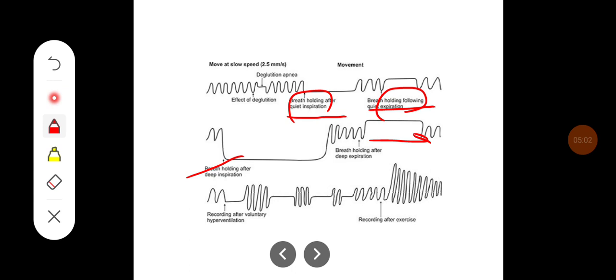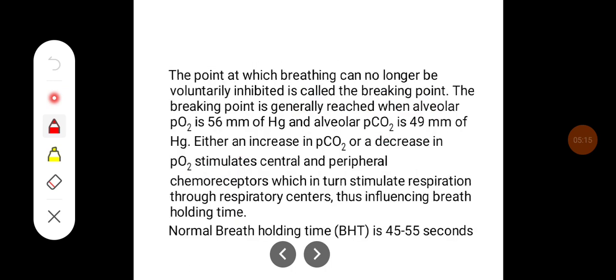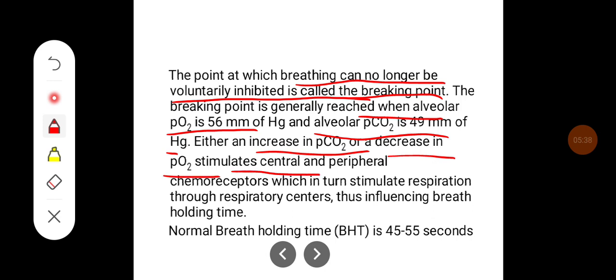Stimulation of the respiratory center is delayed, so breath holding time is greater with deep inspiration than with expiration. The point at which breathing can no longer be voluntarily inhibited is called the breaking point. The breaking point is generally reached when alveolar pO2 is 56 mmHg and alveolar pCO2 is 49 mmHg. Either an increase in pCO2 or a decrease in pO2 stimulates central and peripheral chemoreceptors, which in turn stimulate respiration through respiratory centers, influencing the breath holding time. The normal breath holding time is around 45 to 55 seconds.